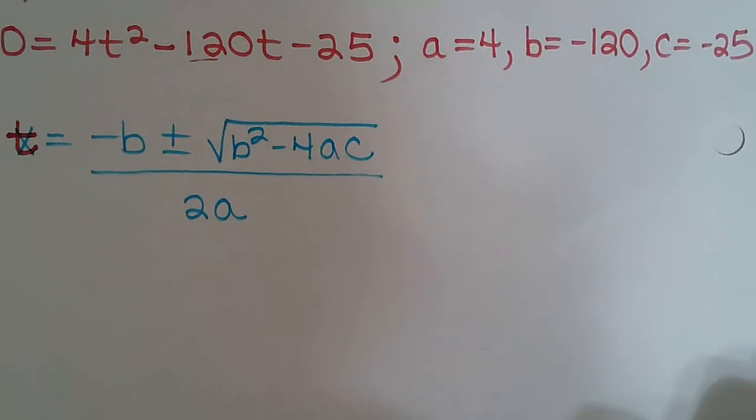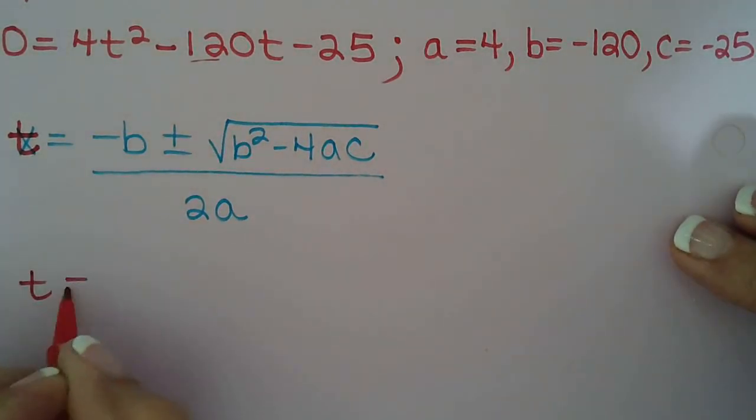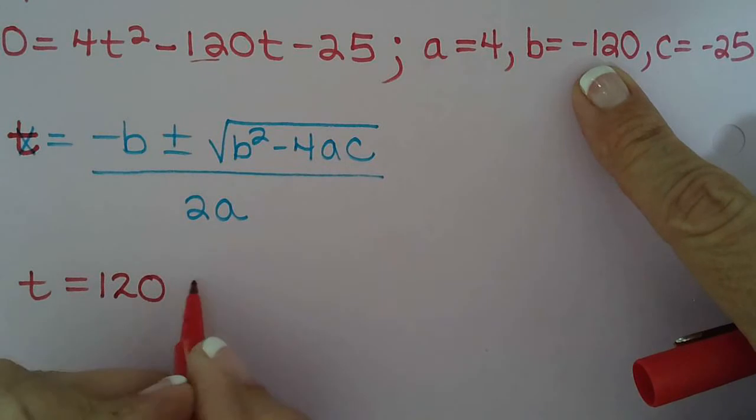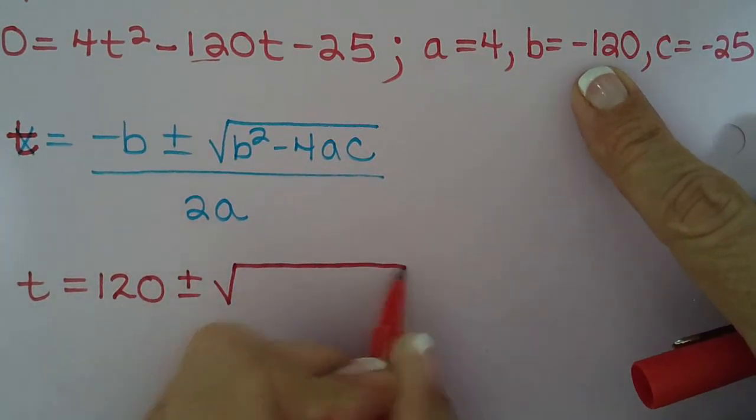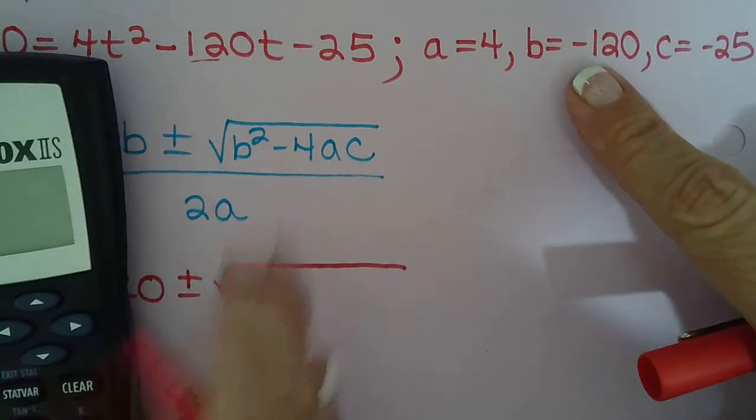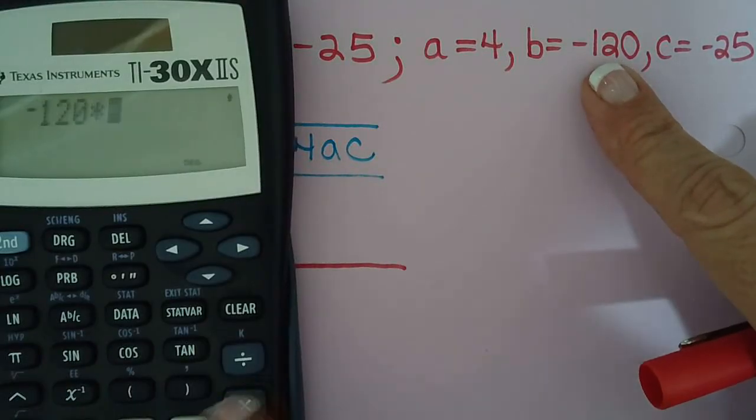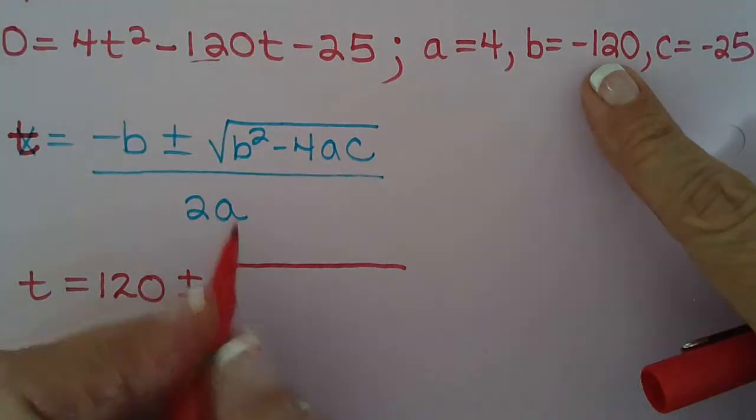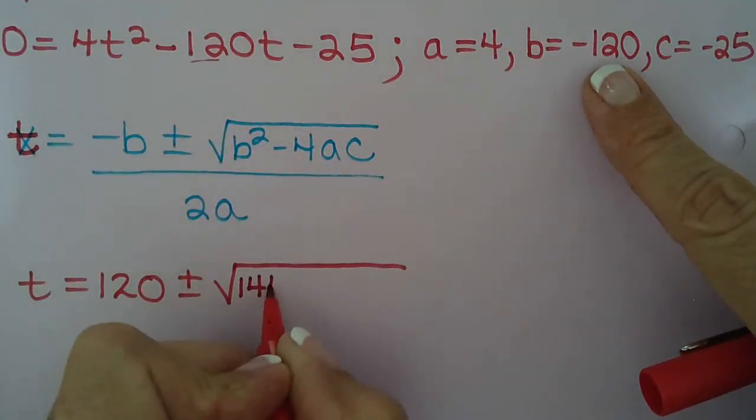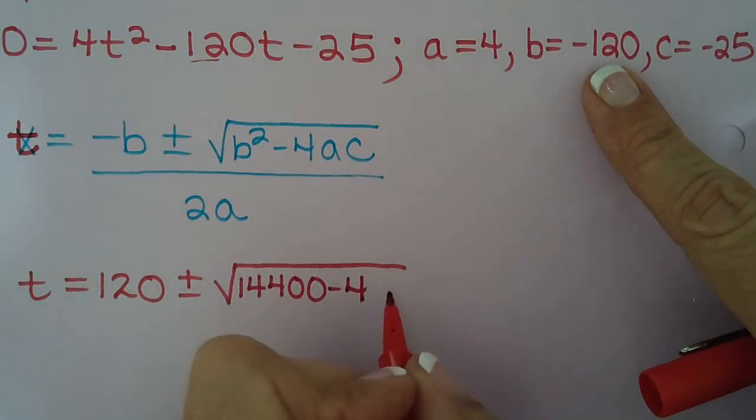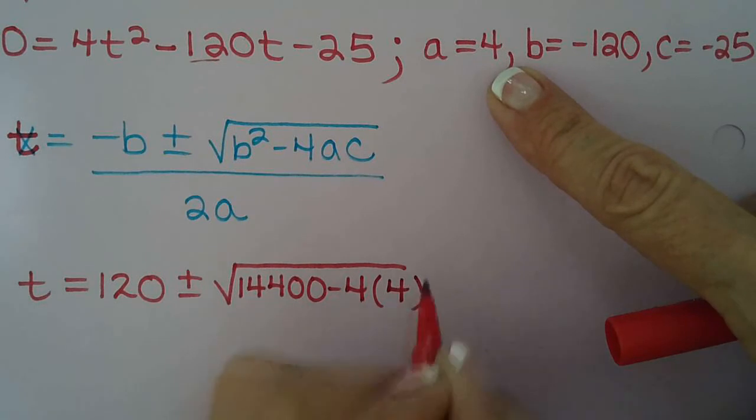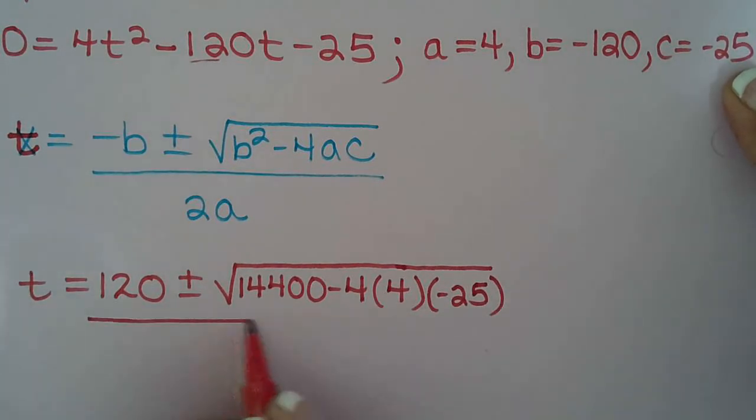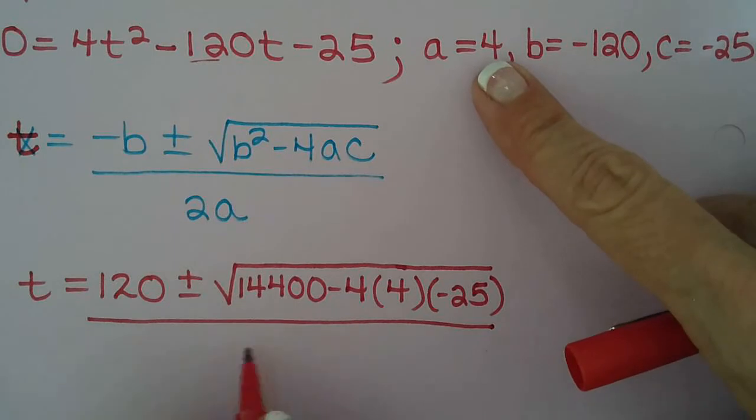Okay, let's fill in for the quadratic formula and then we'll plug this into our calculator. So t equals opposite of b, so the opposite of negative 120 is positive 120 plus or minus. b squared is negative 120 times negative 120. So negative 120 times negative 120 is 14,400. And we know this first value is always positive because anything squared is always positive. Minus 4 times a, which is 4 times c, which is negative 25. All over 2 times a, so 2 times 4.